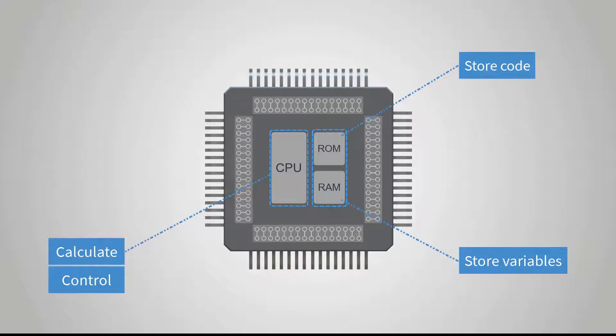So it can be understood as: read-only memory ROM is used to store programs, and random access memory RAM is used to store data. I/O stands for input and output interfaces, mainly used for communication between external circuits and the CPU.